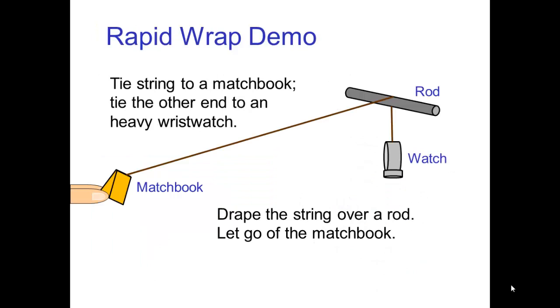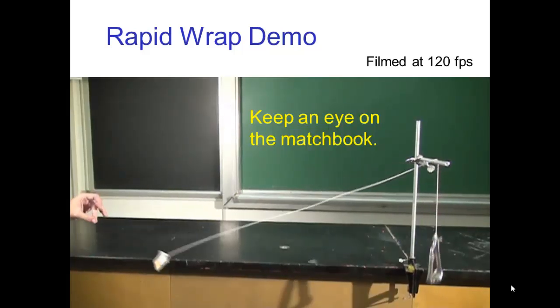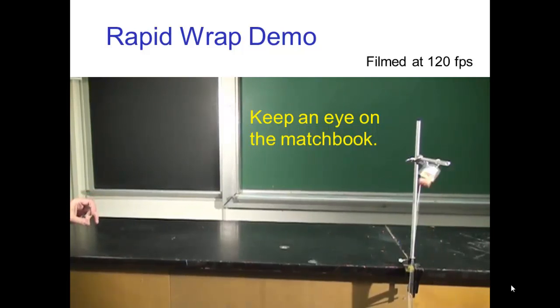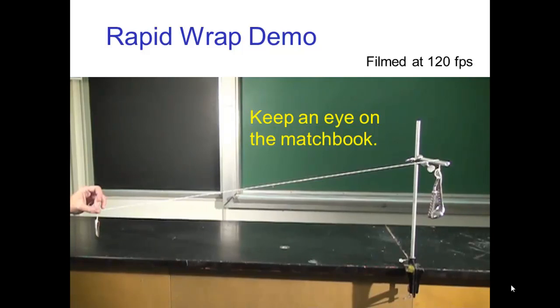Let's see an example of a path of action that's a spiral. We'll tie a string to a matchbook and tie the other end to a heavy watch. The string is draped over a rod, and then we let go of the matchbook. Keep an eye on the matchbook. The action is quick, so this was filmed in slow motion.